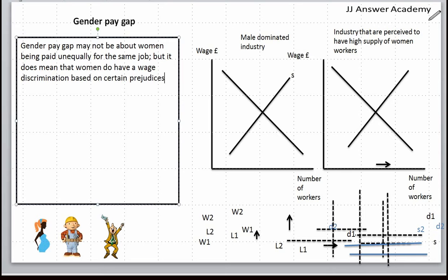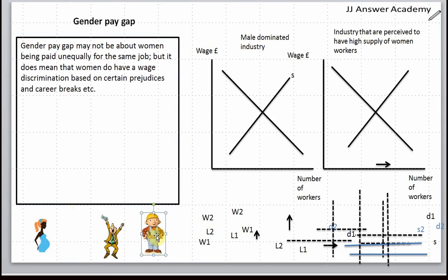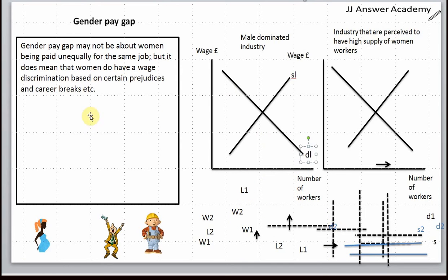Based on certain prejudices and career breaks, let's try to understand what's happening. I've put down male-dominated industries and industries that have a high supply of women workers. For male-dominated industries, I've put down Bob the Builder. Why don't we have Nancy the Builder? The construction industry needs more physical toughness for labor productivity, and there might be a bias against women being employed there. We can see the supply of labor and demand for workers, where demand is affected by prejudice in male-dominated industries.